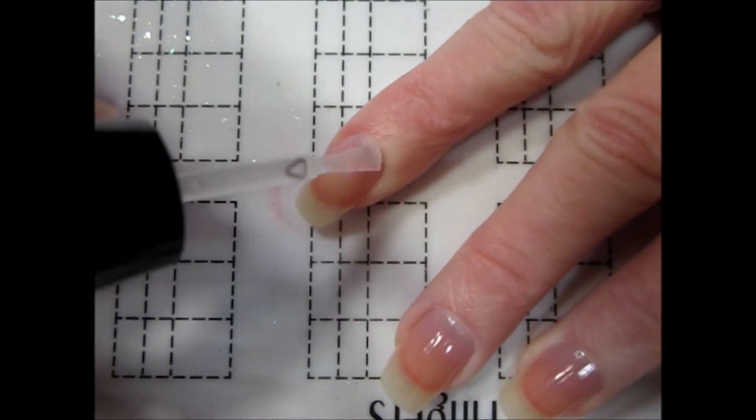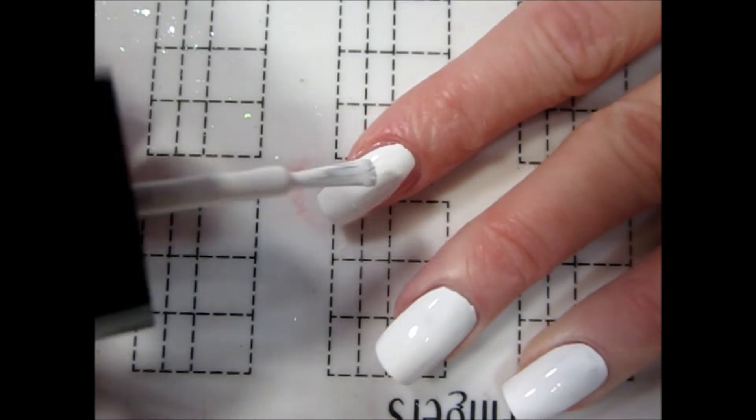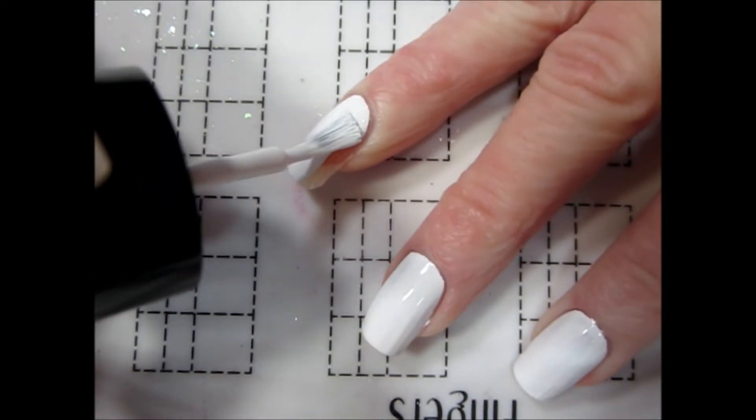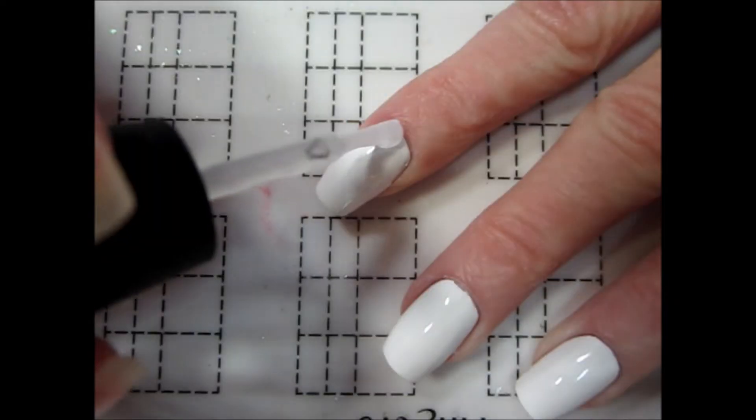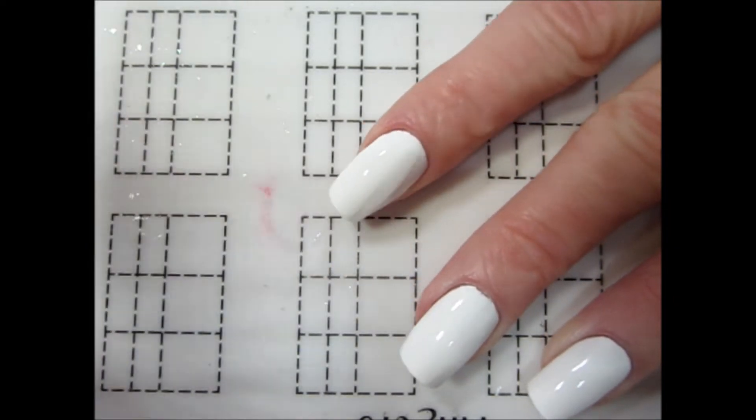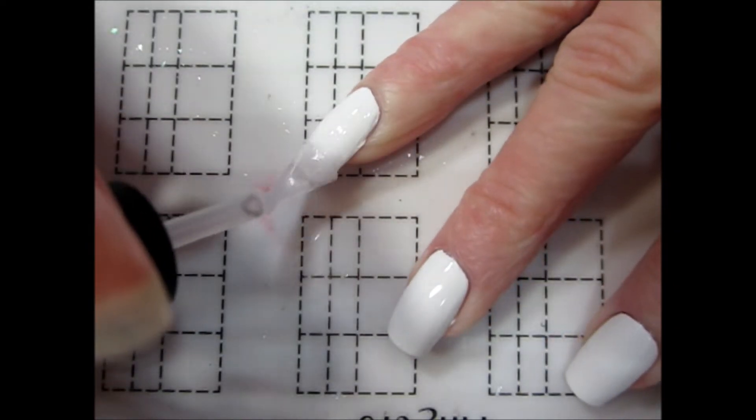To start, I applied a base coat and white polish to all of my nails. I then applied a matte top coat over the white. The texture of the matte polish helps the paint that I'll be using stick to the base and builds opacity more quickly.